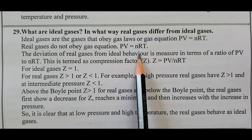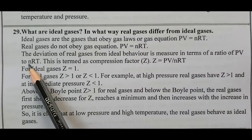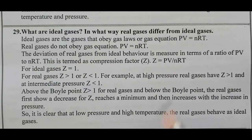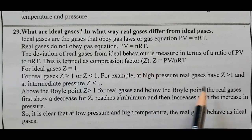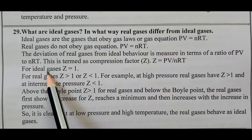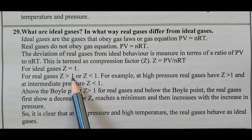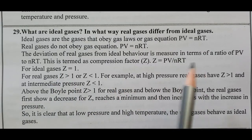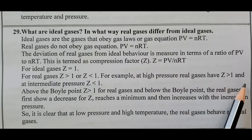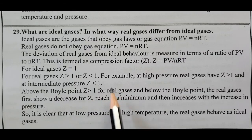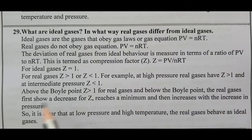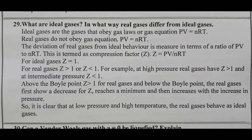The deviation of real gases from ideal behavior is measured in terms of the compressibility factor Z = PV/nRT. For ideal gases, the compressibility factor Z equals 1. For real gases, Z is not always equal to 1; Z can be greater than 1 or less than 1. At high pressure, real gases have Z greater than 1, and at intermediate pressure Z is less than 1. Above the Boyle point, Z is greater than 1 for real gases, and below the Boyle point, real gases first show a decrease in Z, reaching a minimum, then increase with increasing pressure. At low pressure and high temperature, real gases behave as ideal gases.